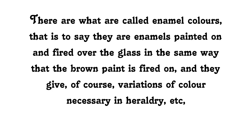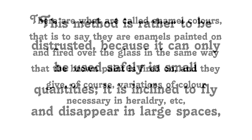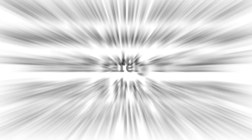There are what are called animal colours — they are painted on and fired over the glass in the same way that the brown paint is fired on. This method is rather to be distrusted because it can only be used safely in small quantities; it is inclined to flee and disappear in large spaces. We have now dealt with the main materials: the glass, the leads, the stain and the paint.